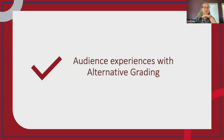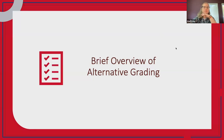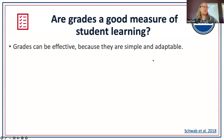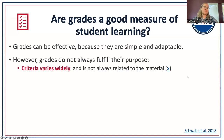I'm going to move into a brief overview of alternative grading. We start with the question: are grades a good measure of student learning? You may hear some people say grades are great — they're effective, simple, adaptable. You can get an A in a math class or an English class. But what does that really mean? Are grades effective at serving the purposes we set out for them? The answer is maybe.